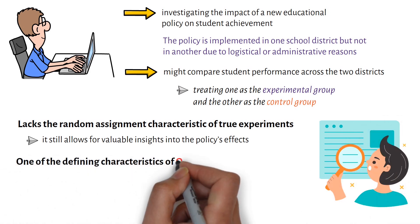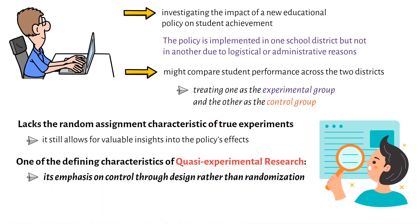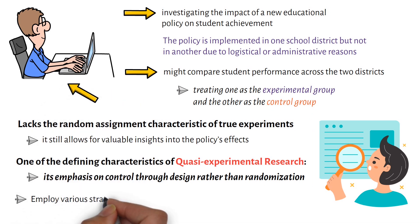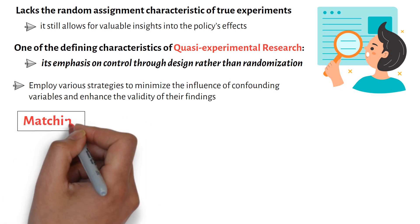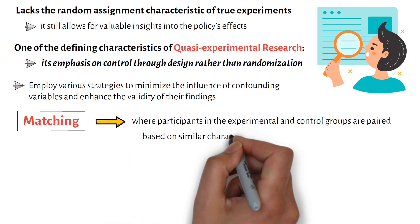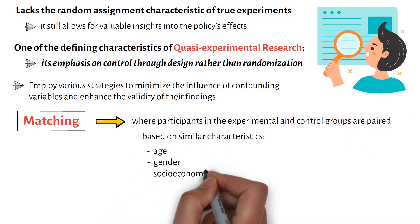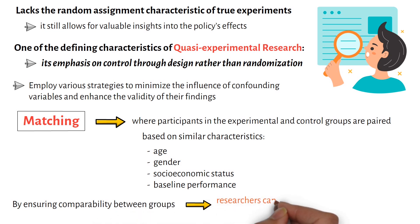One of the defining characteristics of quasi-experimental research is its emphasis on control through design rather than randomization. Researchers employ various strategies to minimize the influence of confounding variables and enhance the validity of their findings. Matching is a common technique where participants in the experimental and control groups are paired based on similar characteristics such as age, gender, socioeconomic status, or baseline performance. By ensuring comparability between groups, researchers can reduce biases and increase the credibility of their results.